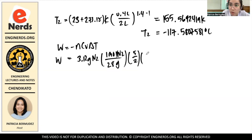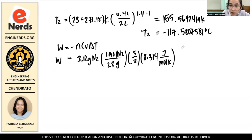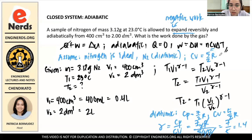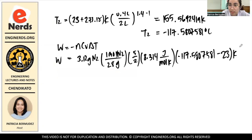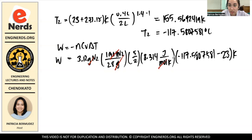Then Cv is 5/2, and we use R = 8.314 J/(mol·K), since our answer for work should be in joules, and this gas constant is already in joules per mole Kelvin. Delta T is T2 minus T1: −117.5807581 minus 23. The change in temperature in Celsius equals the change in Kelvin, so units cancel — grams cancel with grams per mole, moles cancel, Kelvin cancels — leaving joules.